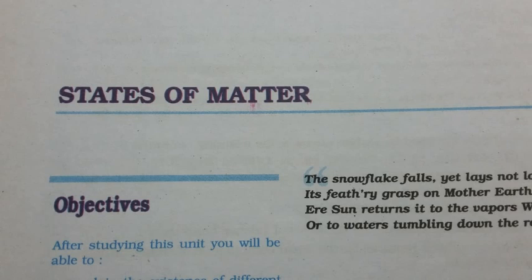Volume of 1 mole of an ideal gas under STP conditions is 22.710981 liters per mole. The value of R for 1 mole of an ideal gas can be calculated as: R = (10⁵ Pa × 22.71 × 10⁻³ m³) / (1 mol × 273.15 K) = 8.314 J K⁻¹ mol⁻¹. Under earlier STP conditions, the value of R is 8.20578 × 10⁻² L atm K⁻¹ mol⁻¹.